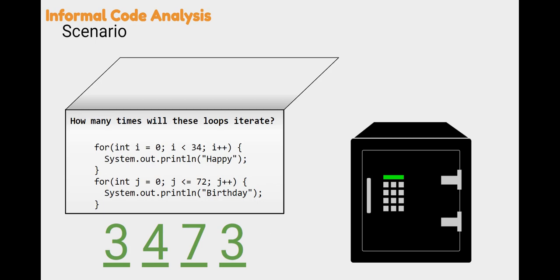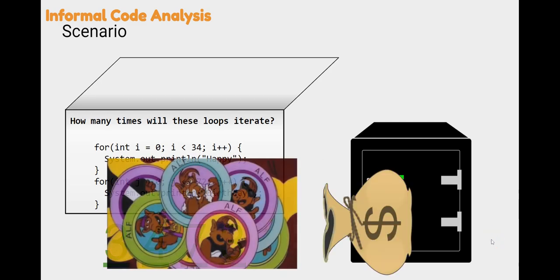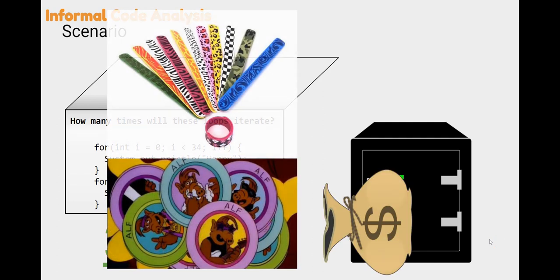The combination — you punch in 3, 4, 7, 3, and the safe opens up, and the bag tips over, and really there was no money in the bag. It was just leftover pogs and slap bracelets that I had from the 80s. I'm trying to make this informal code analysis relevant.